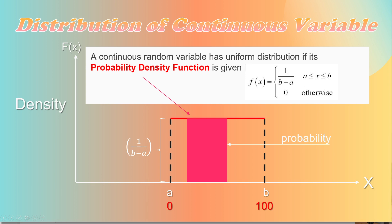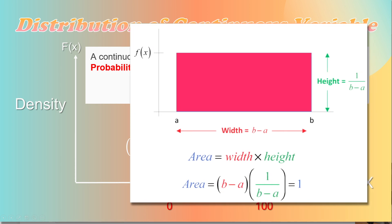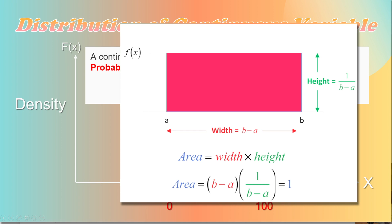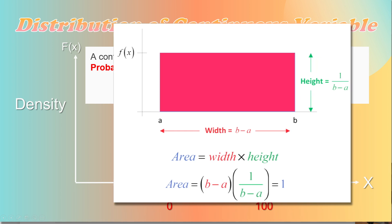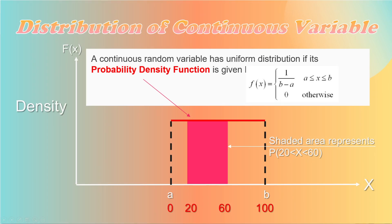Rather, it represents the value of a density function, which is used to compute the probability for continuous random variables. The area under the density curve is the probability, and the entire area between 0 and 100 is equal to 1, because this random variable can only take a value in this range. To compute the probability for x taking a value between 20 and 60, we need to obtain the area with a pink color.